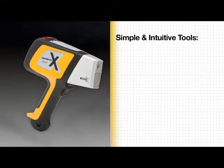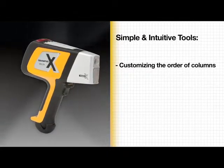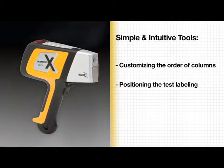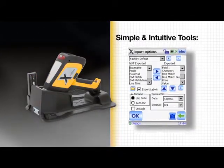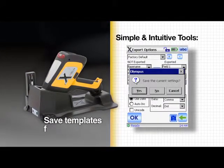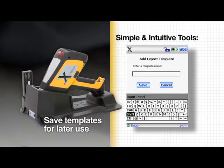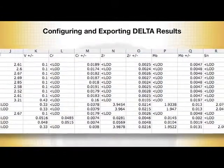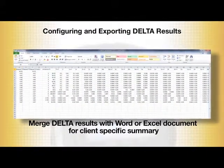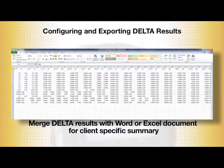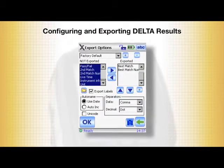The Delta has simple intuitive tools for customizing the order of columns, positioning the test labeling, and displaying the information needed. If your organization requires more than one reporting format, you can easily save templates for later use. You can then seamlessly merge the Delta export results with a Word or Excel document to create a client-specific summary.